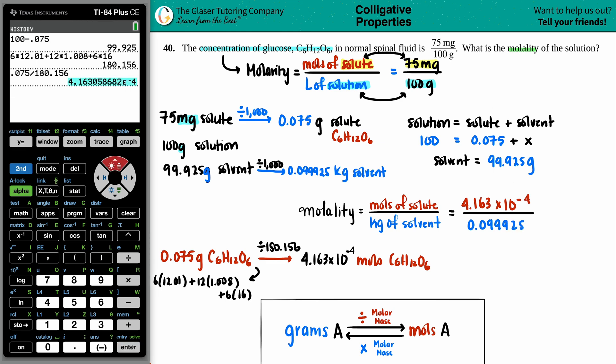So this number divided by 0.099925. And that looks good to me. Let's press enter. And that's your molality. So we get 0.0042 molality.